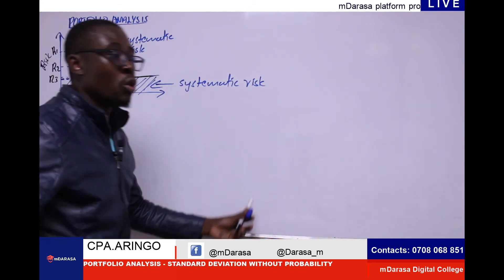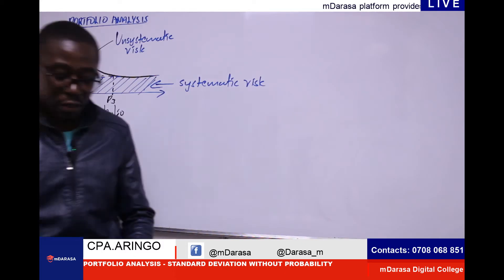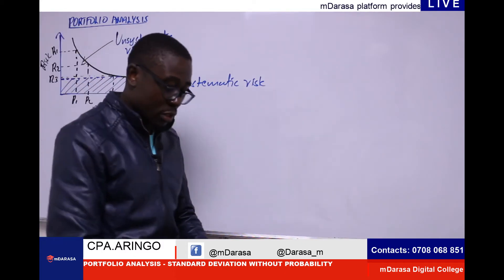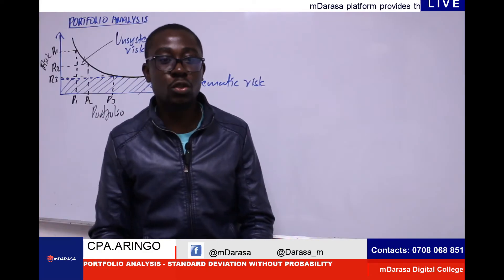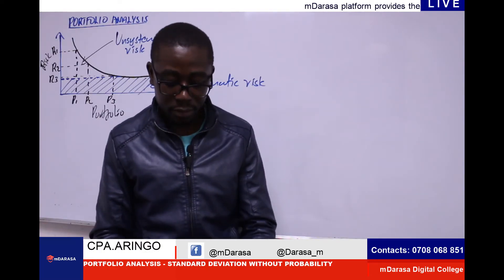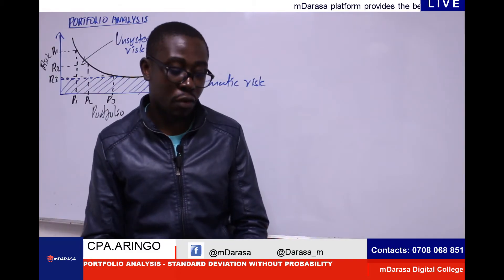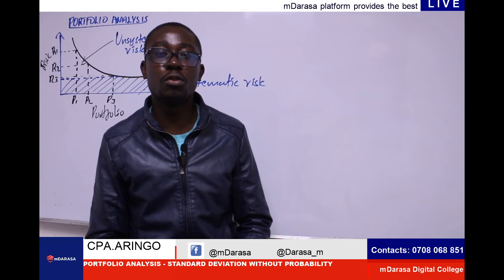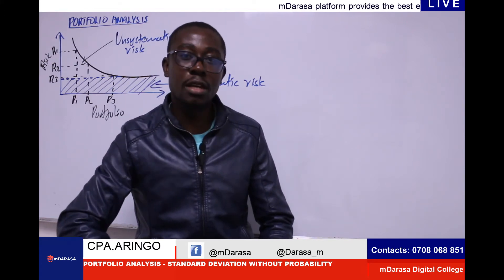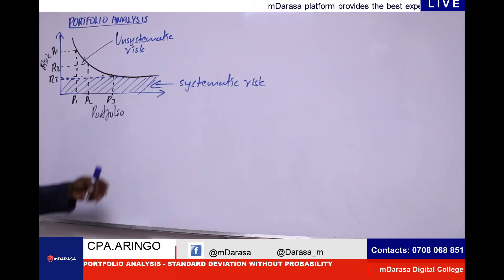Systematic risk affects the whole industry, the whole company. A good example is the black swan event that happened in 2020 — remember COVID-19. Regardless of the portfolio that you're having, you are affected. So that is a form of risk referred to as systematic risk — regardless of the portfolio you're having, you're going to be affected.